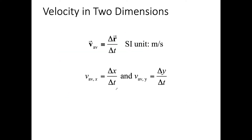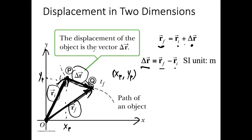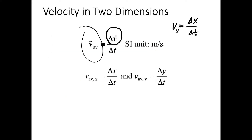Now we have velocity in two dimensions. If we recall, velocity in one dimension is delta x over delta t — displacement divided by time. Now in two dimensions, it's almost the same: displacement in two dimensions divided by time gives us velocity. This time displacement is a vector, so our average velocity has a direction as well, and that direction is exactly the same as the displacement.